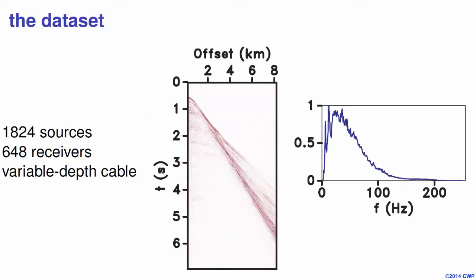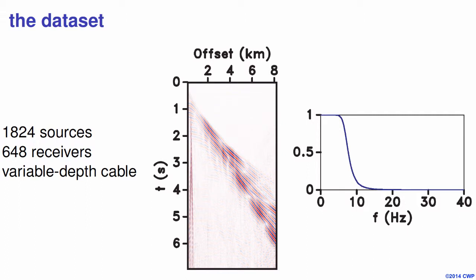With this background in mind, let me tell you about the dataset. This is a 2D streamer dataset with a variable depth cable. The variable depth cable enhances the frequency response of the data, as I will explain further. On the right you can see the average spectrum for the shot gathers — we have data up to hundreds of hertz. For the data domain implementation, we only use a band-limited version, inverting approximately up to 9 hertz. The filter applied to retrieve these low frequencies is also shown on the right.